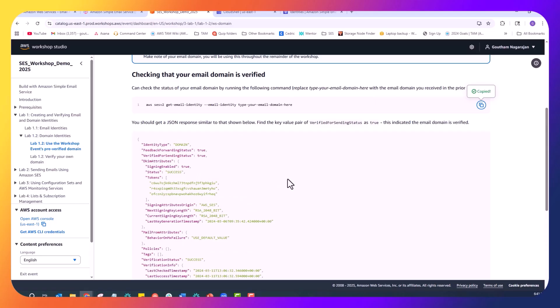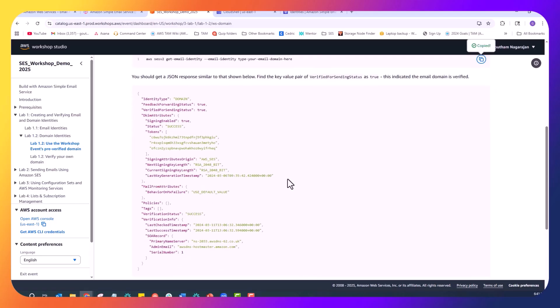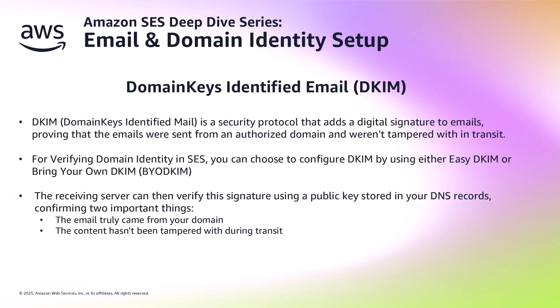As we check the domain identity using GetEmailIdentity, we can see several important attributes including the verification status and authentication settings. Before we look at the settings, let me explain an important concept in email authentication: DKIM, or Domain Keys Identified Email. Think of DKIM as a digital seal on your emails. When you send an email, your domain adds a unique digital signature to it. The receiving server can then verify the signature using a public key stored in your DNS records. This confirms two important things: that the email truly came from your domain, and that the content hasn't been tampered with during transit. This is why Amazon SCS uses DKIM as the primary method to verify and manage domain identities. It is not just an optional security feature — it is an integral part of the domain verification process.